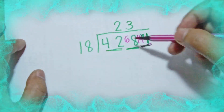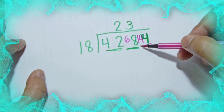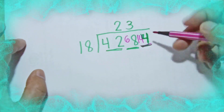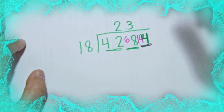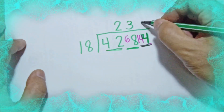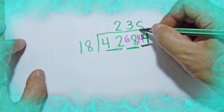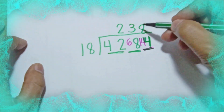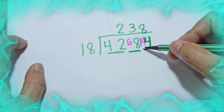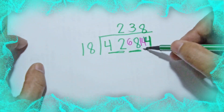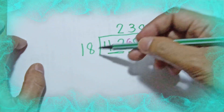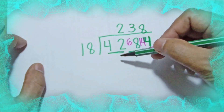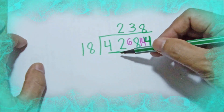How many 18s can we make from 144? We can make 8. 8 times 18 is 144, and 144 minus 144 is 0.